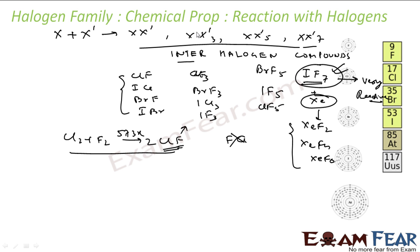The greater the difference in electronegativity between X and X', the greater the number of bonds formed with the central atom. For example, iodine and fluorine have the maximum electronegativity difference — fluorine is 4, chlorine is 3.16, bromine is 2.96, iodine is 2.66. So fluorine and iodine have the maximum difference, giving IF7 with more bonds. Also note that fluorine is not the central atom; iodine is the central atom. For chlorine and fluorine, the difference is less, so you get compounds like CLF5, CLF3, and CLF.